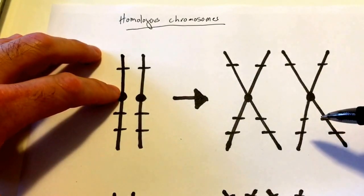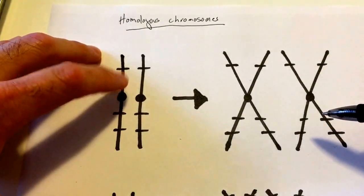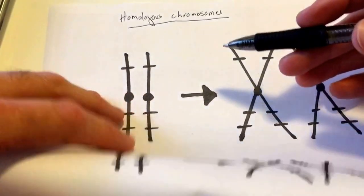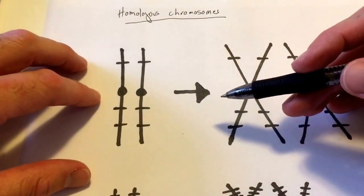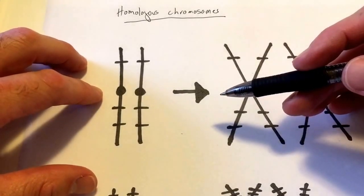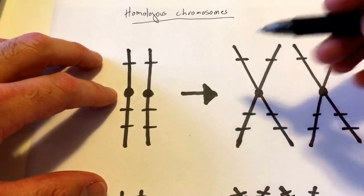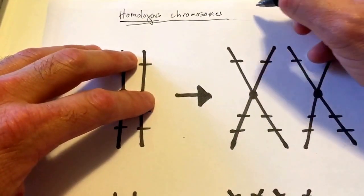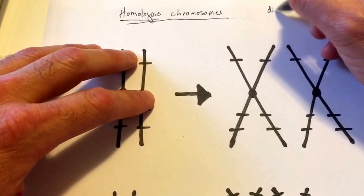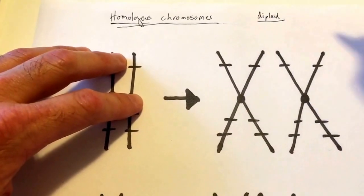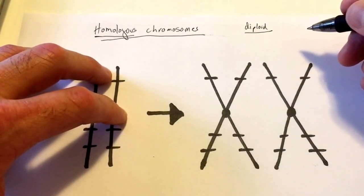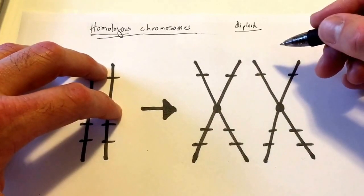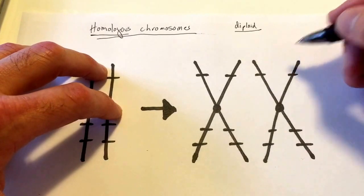You will have come across in your reading or in the lecture a term which is used frequently, and this term is homologous chromosomes. Let me remind you of the fact which we've talked about in the lecture: human beings have a diploid genome. This term diploid refers to the fact that we have two sets of chromosomes. We inherit one set of chromosomes from our mother and another set of chromosomes from our father.